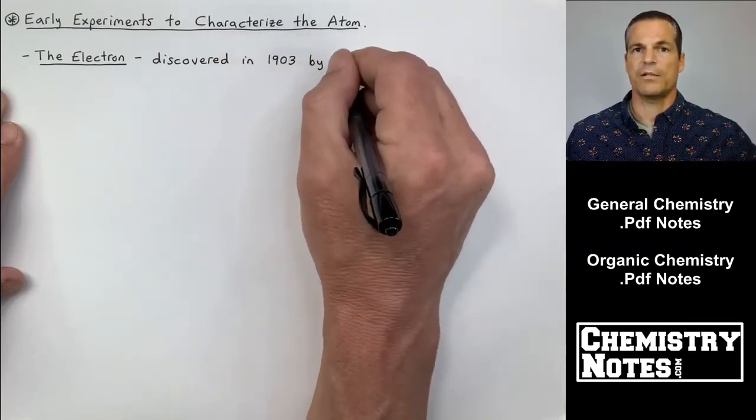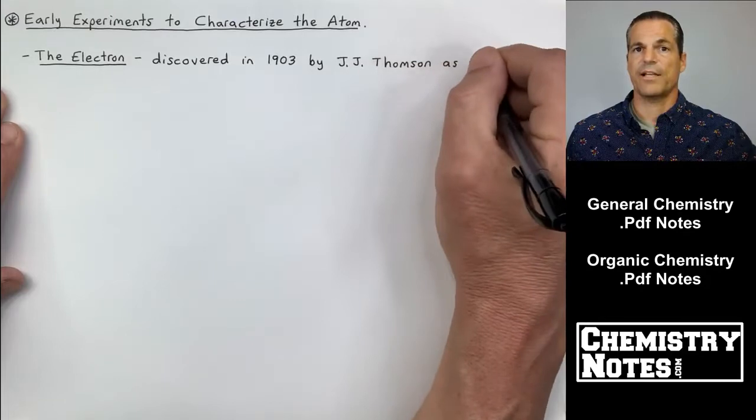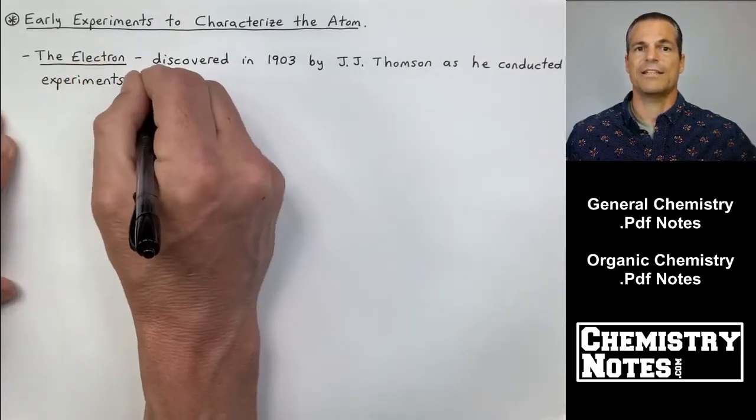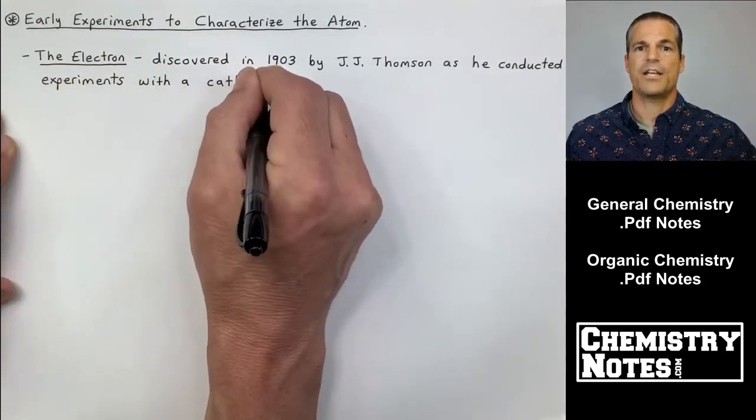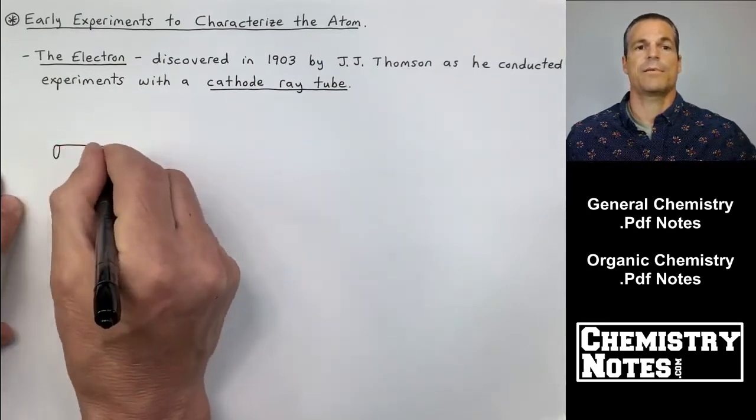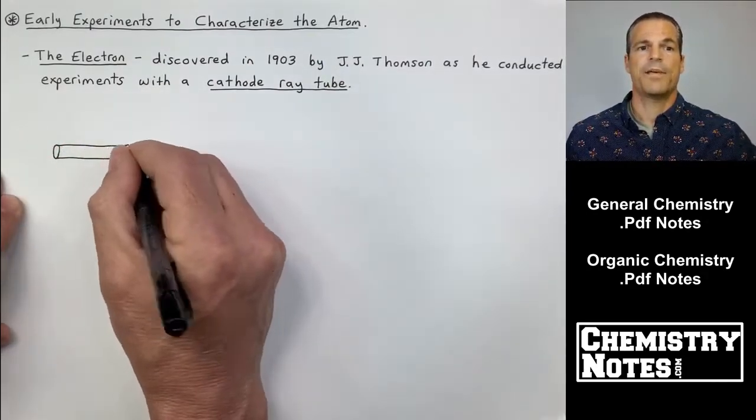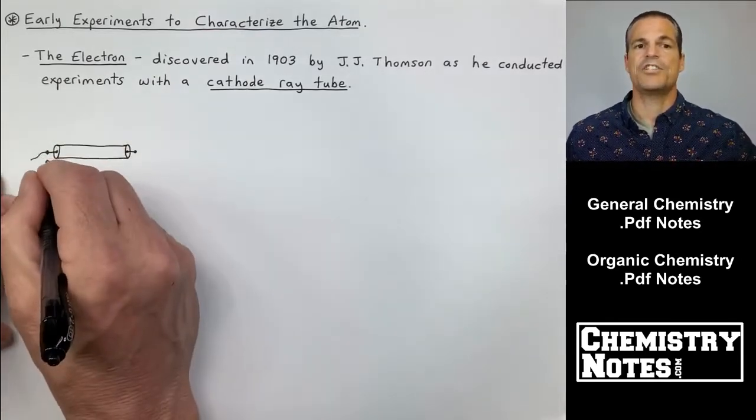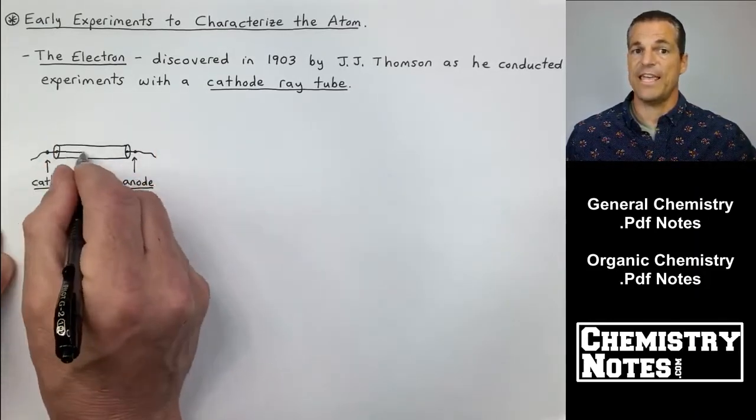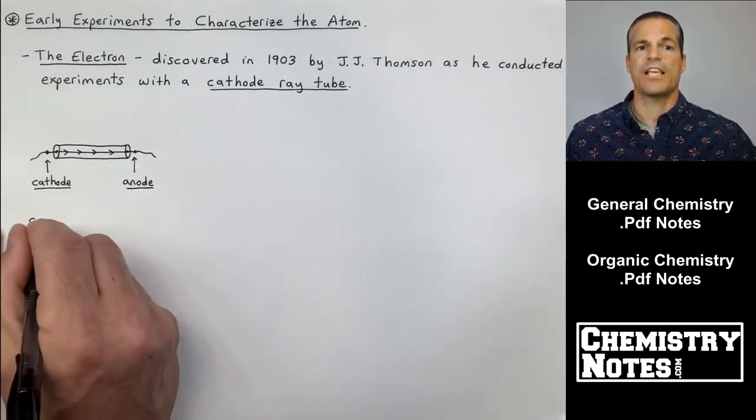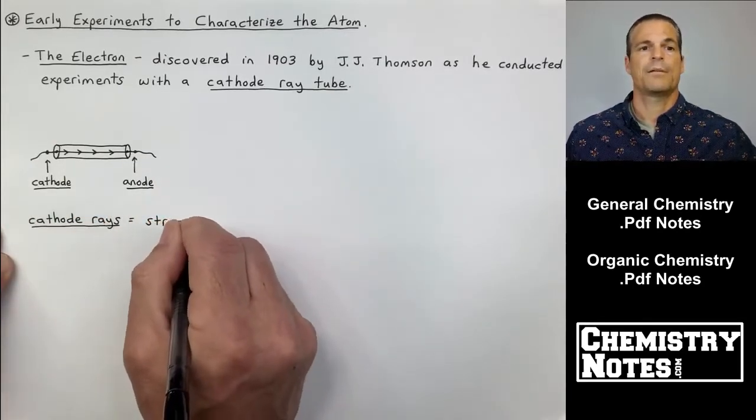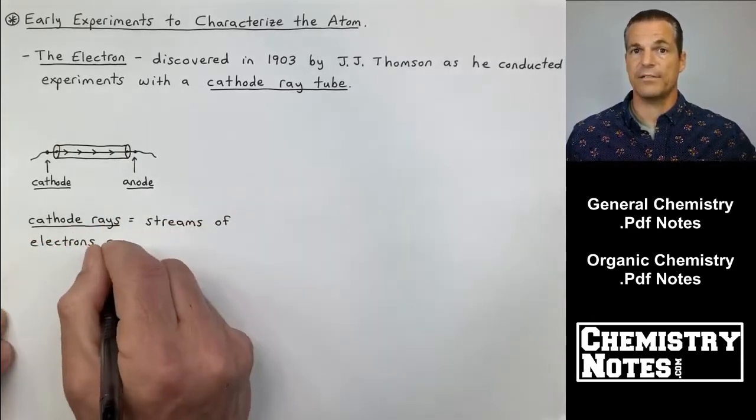Today we're going to talk about some of the early experiments that were used to characterize the atom. The first one is J.J. Thompson and his discovery of the electron. The electron was discovered in 1903 by J.J. Thompson as he conducted experiments with a cathode ray tube. I'm going to sketch out a cathode ray tube for you. It's basically just a cylinder and on each end we have an electrode. On the left-hand side we have a cathode and on the right-hand side we have an anode. We see that there is a current moving from the cathode to the anode.